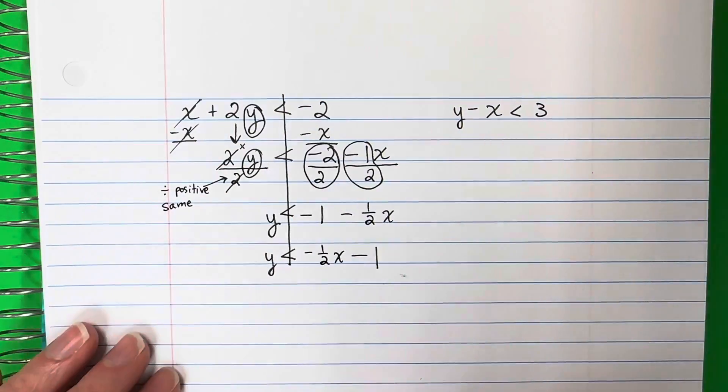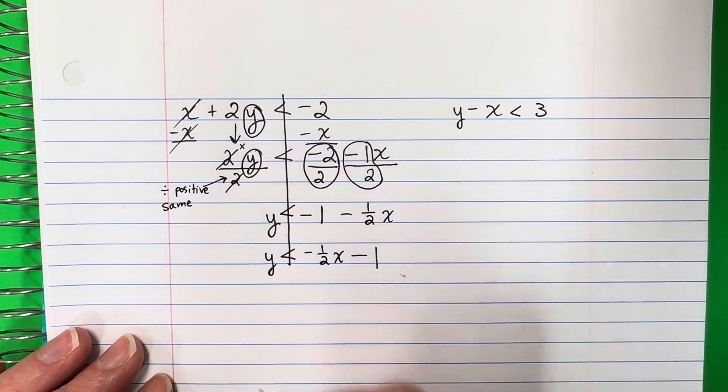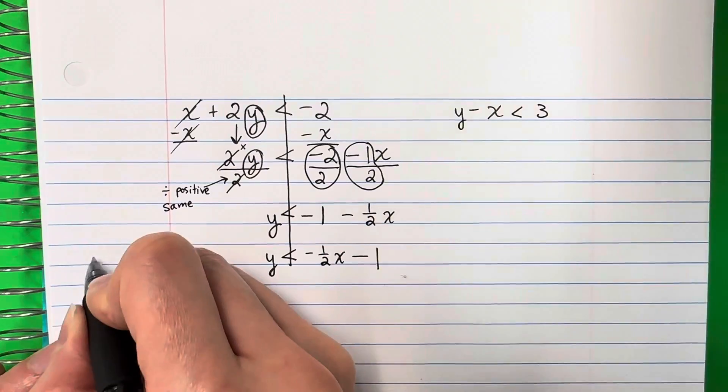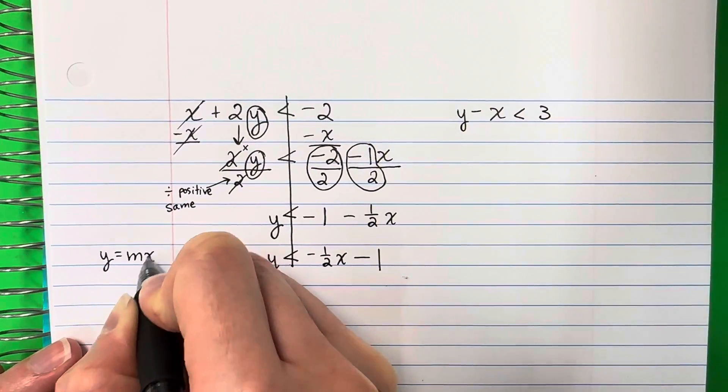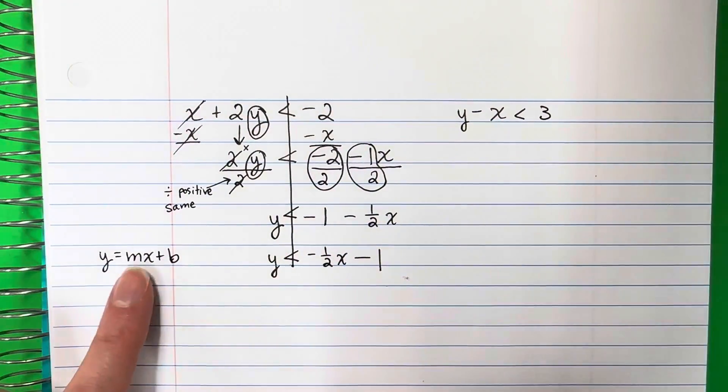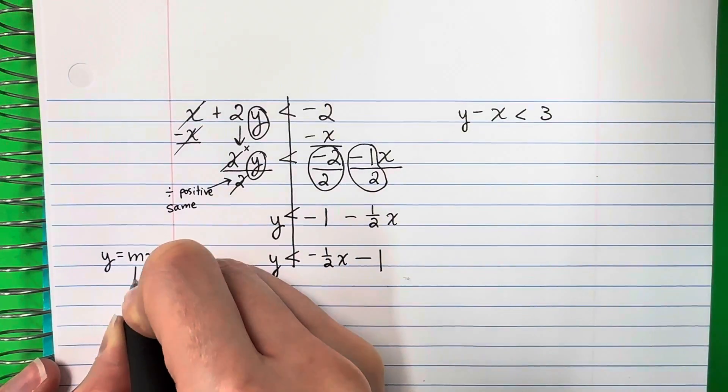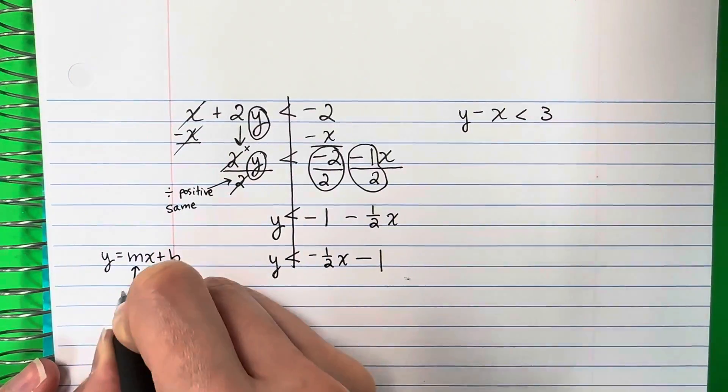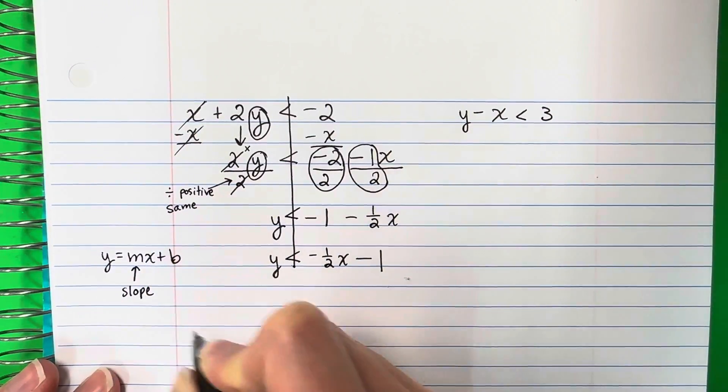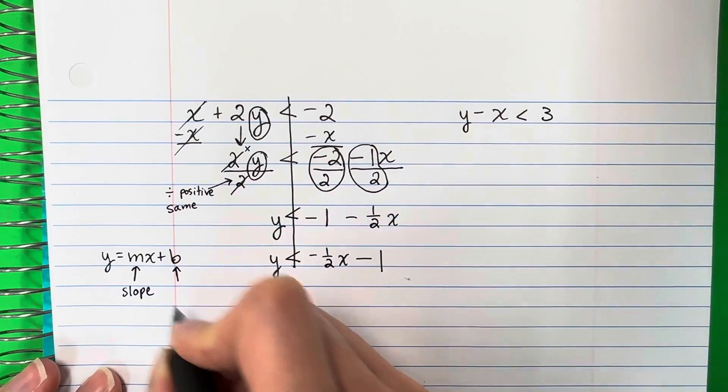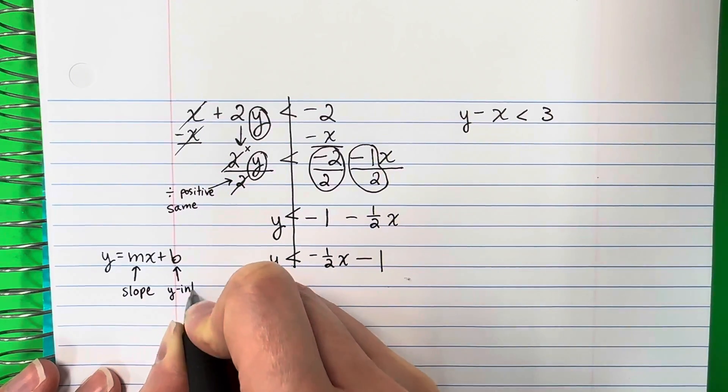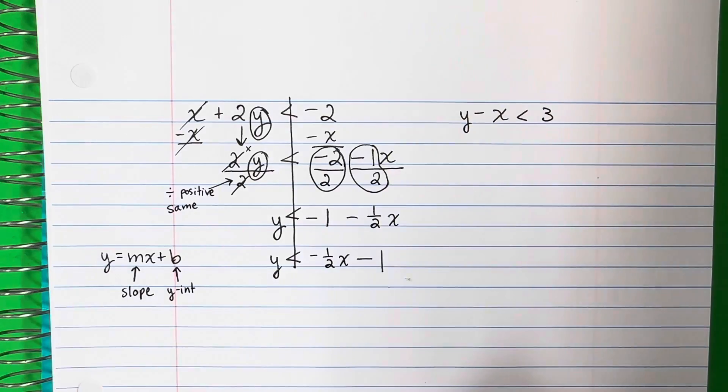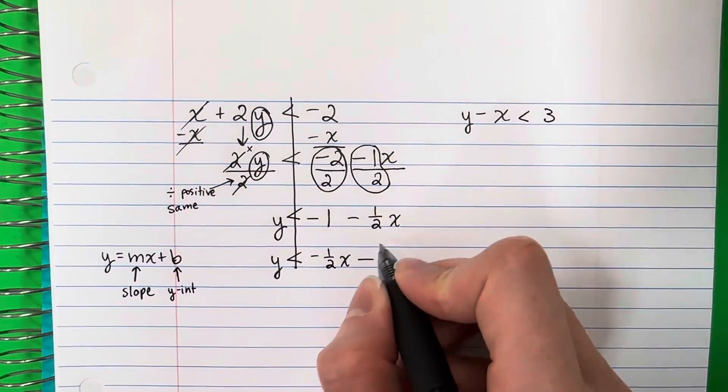Negative 2 divided by 2, let's go ahead and put that in the calculator. Negative 2 divided by 2, that is negative 1. And then now negative 1 divided by 2, that is negative 1 half x. And here, if you're doing divide, you need to look at the number down. This is positive. If it's positive, it's the same sign. If it's negative, you need to change it. But in this case it's positive, so the same sign. Now we're going to go ahead and switch that. So y is less than. I put negative 1 half x minus 1.